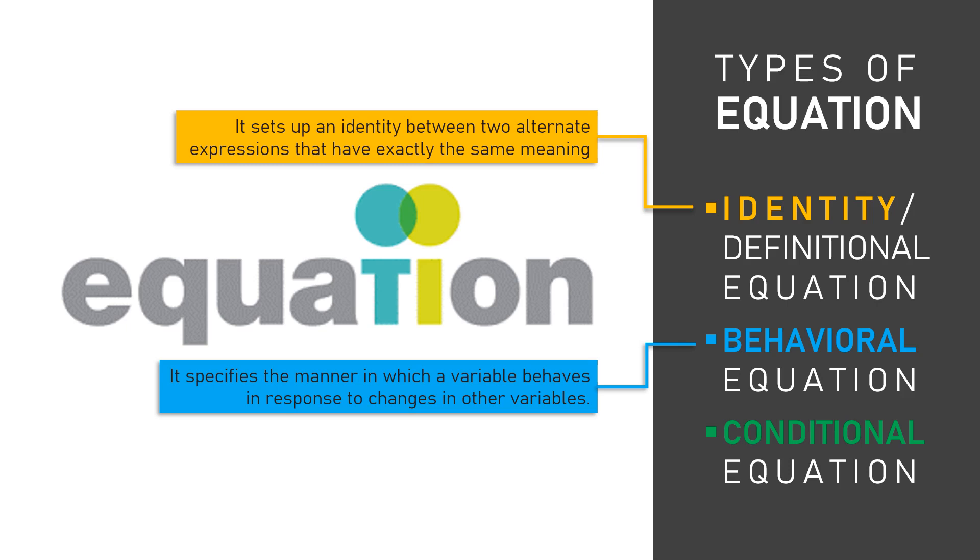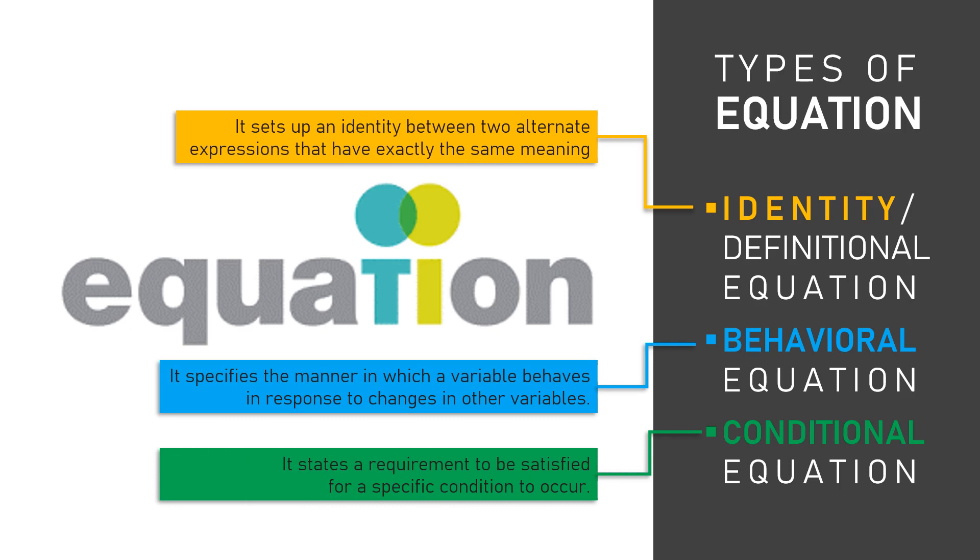Lastly, we have a conditional equation. As it is named, the equation is a condition or a requirement for a specific condition to happen. Equilibrium is a specific condition that can be achieved, for instance. Maximum profit is a specific condition too. Even maximum grade that you can get in one subject is also a specific condition that can be achieved by satisfying a particular condition equation.